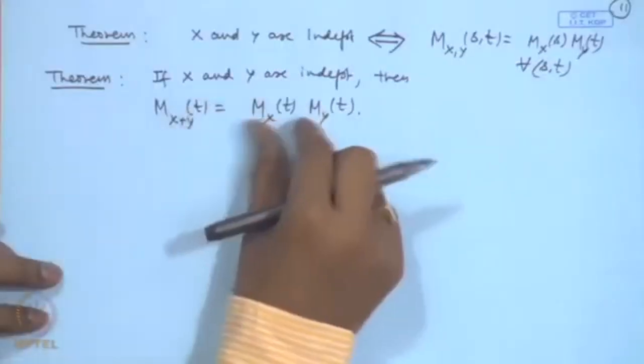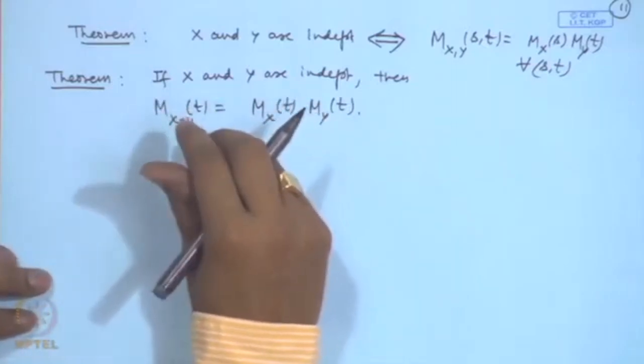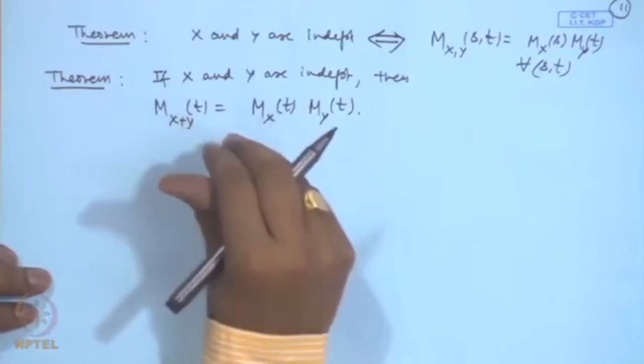Another consequence is that if X and Y are independent, then the MGF of the sum equals the product of the individual MGFs. This is used to prove additive properties of various distributions: the binomial, geometric leading to negative binomial, exponential leading to gamma, and the linearity property of the normal distribution — all proved using the MGF approach.